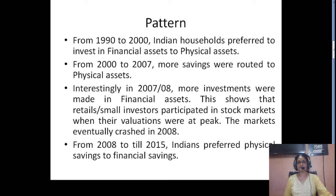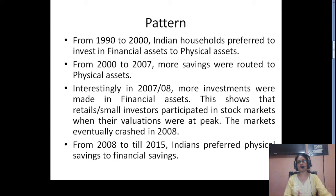After 2000, there was a rise in the real estate industry. From 2000 to 2007, more savings were routed to physical assets. Since people had invested enough in financial assets, they now wanted to buy a house or land. The preference shifted to physical assets like gold, as prices were seeing an upsurge. When people feel prices are rising, they prepone their purchases. So more purchases were made for gold, land, and houses.